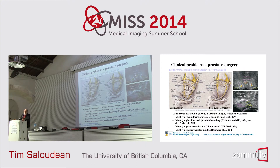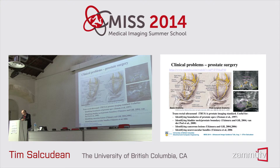Transrectal ultrasound is the standard modality for imaging the prostate — it's the closest approach, just against the rectum, using an anterior-firing array that produces a sector image. It has been shown that this ultrasound used in surgery is useful for identifying the boundary of the prostate apex — the lower part of the prostate where most positive surgical margins occur — as well as for identifying the interface between the bladder and the prostate, and for identifying some cancerous lesions and neurovascular bundles by looking at Doppler flow.